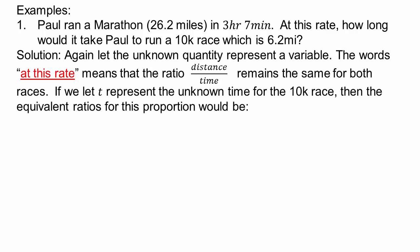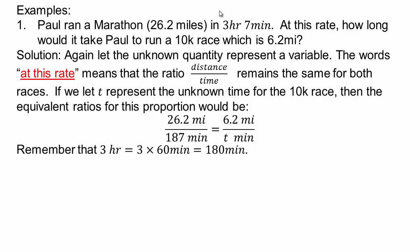Remember when you are saying the rate, that means distance over time ratio. So we're basically comparing two ratios. So Paul ran 26.2 miles in 187 minutes. Why 187 minutes? Three hours is basically three times 60 minutes, right? Three times 60 minutes is 180 minutes, plus seven is 187 minutes.